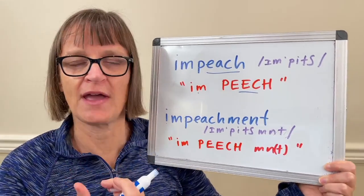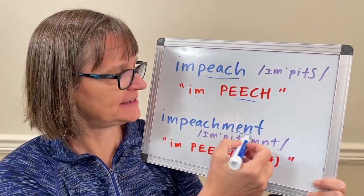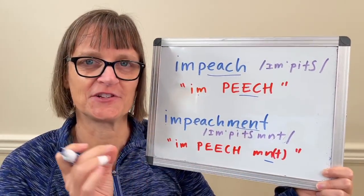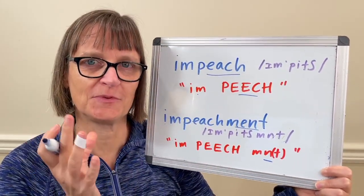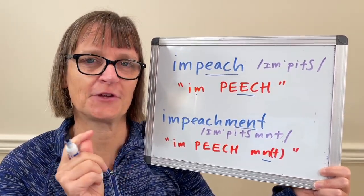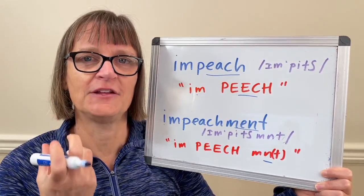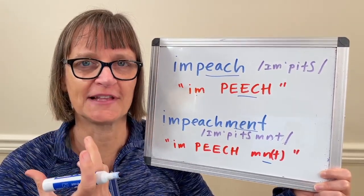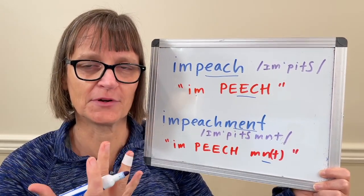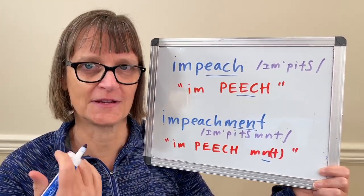We have the same pattern in 'impeachment' — we're just adding the M-E-N-T ending, which we tend to pronounce in American English as 'ment,' meaning we basically have almost no vowel there. It's a syllabic N, so I go right from my M to my N, and then I do have a T sound, but I don't always let it out. I may use a stop T here instead — impeachment, impeachment.